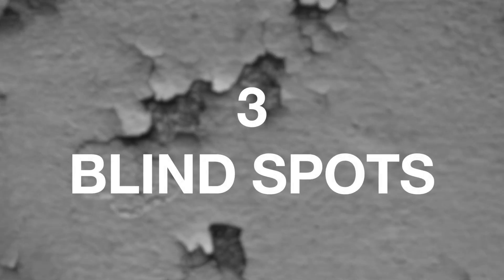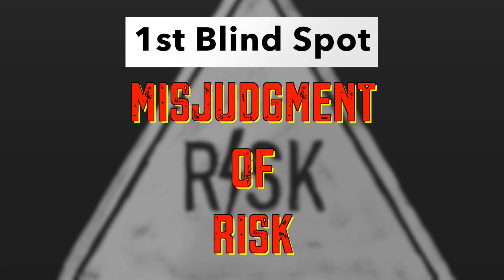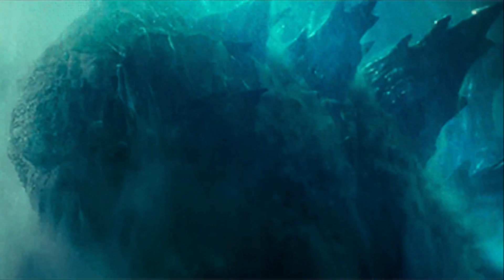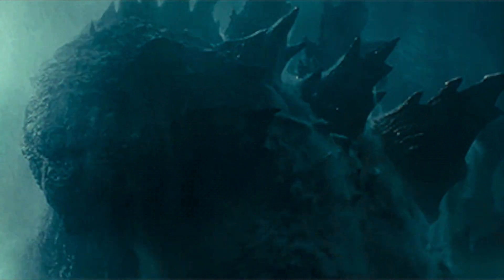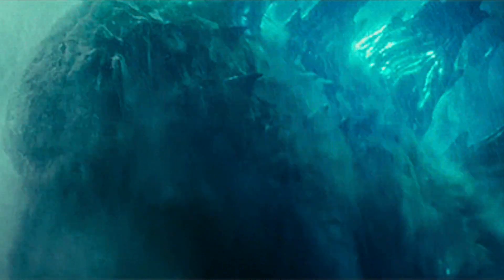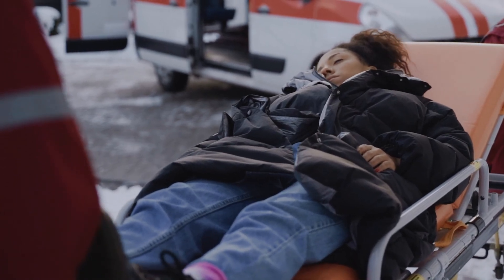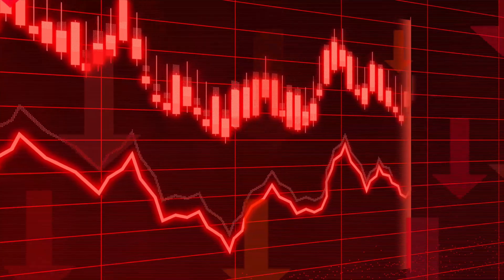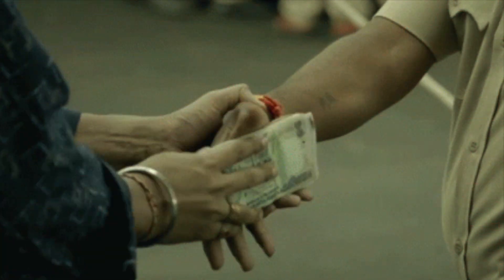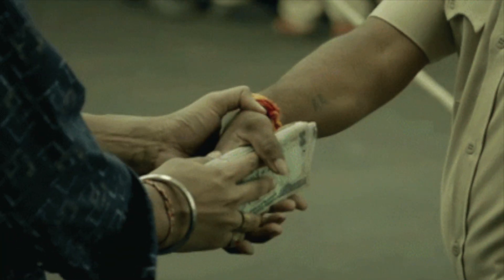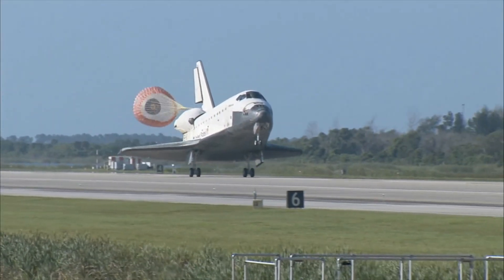Availability bias can negatively impact our decision-making in three major ways. First, it can lead to misjudgment of risk. Availability bias can lead to an overestimation of rare but dramatic risks, and underestimation of more common but less sensational risks such as car accidents or risky mutual funds. On the other hand, we might end up paying too much money for rare events such as airplane crash insurance because we overestimate their actual risk.